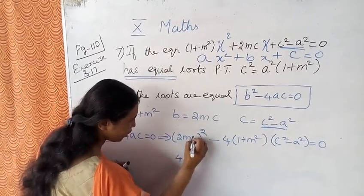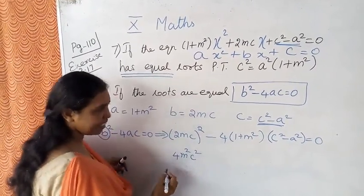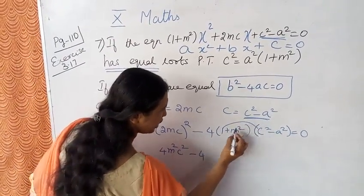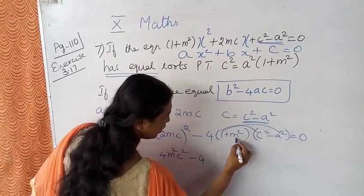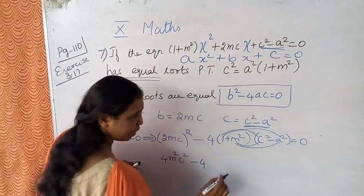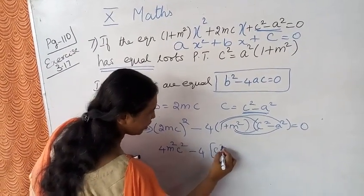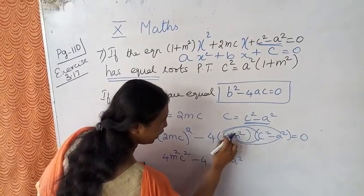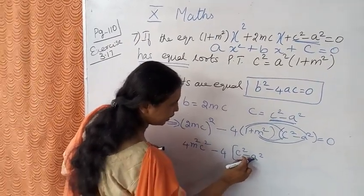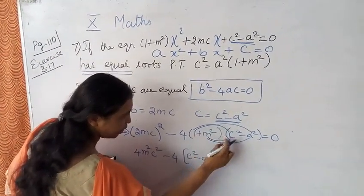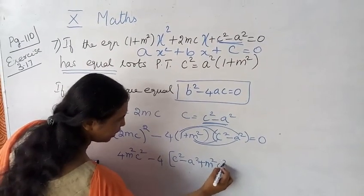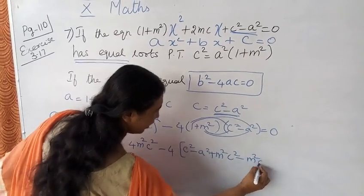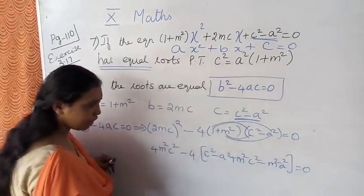Expanding: 2 squared gives 4, m square, c square. Minus 4 multiplied — this into this, this into this, this into this, this into this: 1 into c square gives c square, 1 into minus a square gives minus a square, plus m square into c square gives plus m square c square, plus m square into minus a square gives minus m square a square — equal to 0.